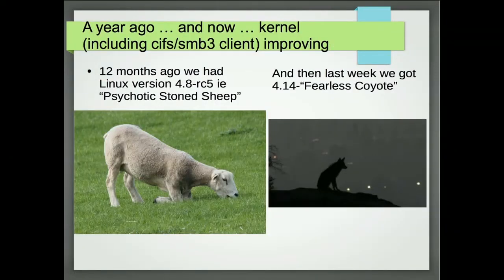I live in a world where I get emails from Linus about SMB3 protocol things, as you saw last week. It's a different world than the storage world. We had 'psychotic stone sheep' — that's what they called the kernel a year ago. Now we're at 'fearless coyote,' whatever that means. These are the names in the kernel Makefile that give a symbolic way of understanding where the kernel is. I kind of prefer fearless coyote over stone sheep.